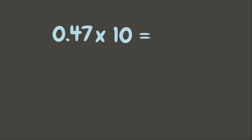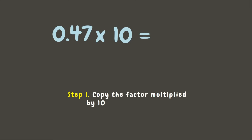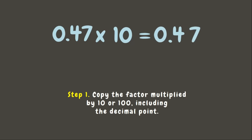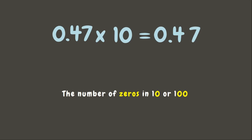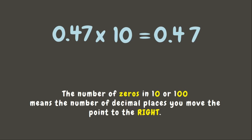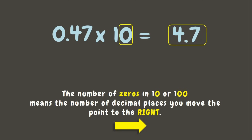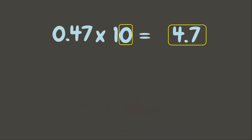How about this one? Let's try 47 hundredths times 10. In multiplying decimals by 10 or 100, the first thing we need to do is copy the factor. Let's copy 47 hundredths. The next step to remember is: the number of zeros in 10 or 100 means the number of decimal places you move the point to the right. Since 10 has one zero, we are going to move the decimal point one place to the right. Let's remove the zero. Now our answer is 4.7, or 4 and 7 tenths.